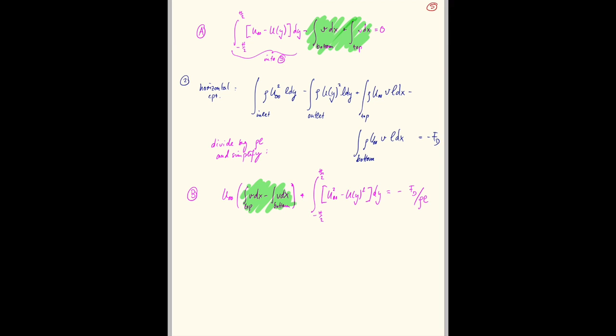And what we get is essentially minus fd over rho L is just minus the integral from h over 2 to h over 2 of u y times u infinity minus u y times dy. So that is our answer here.